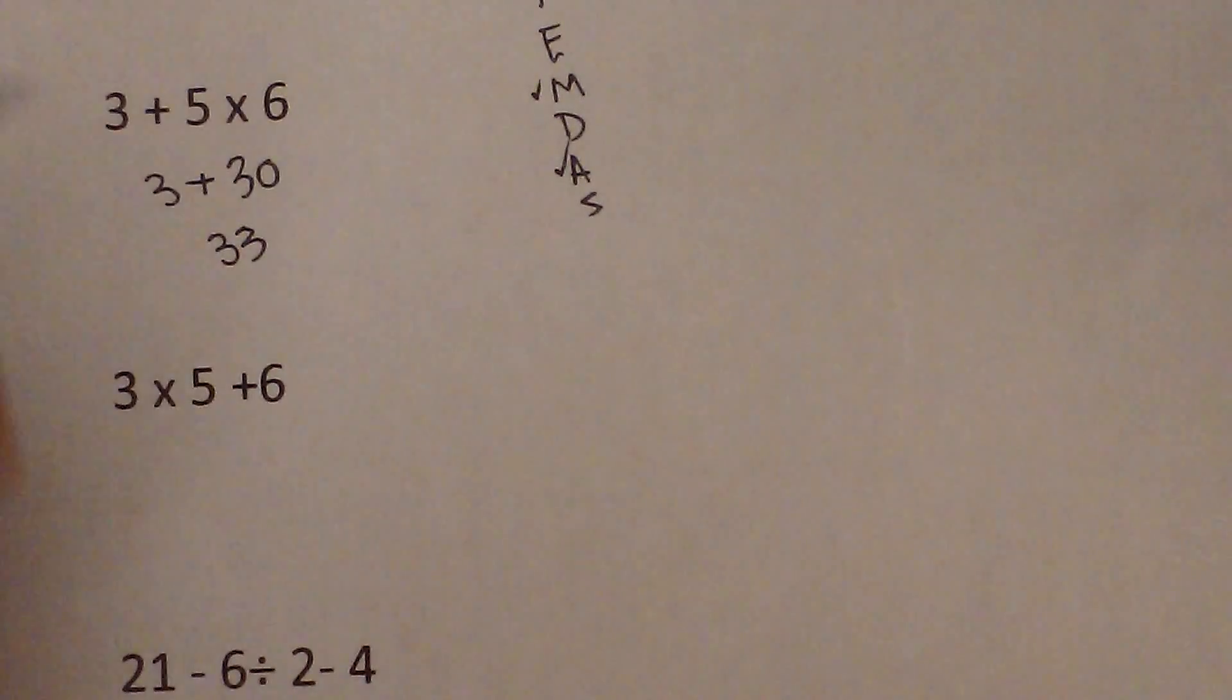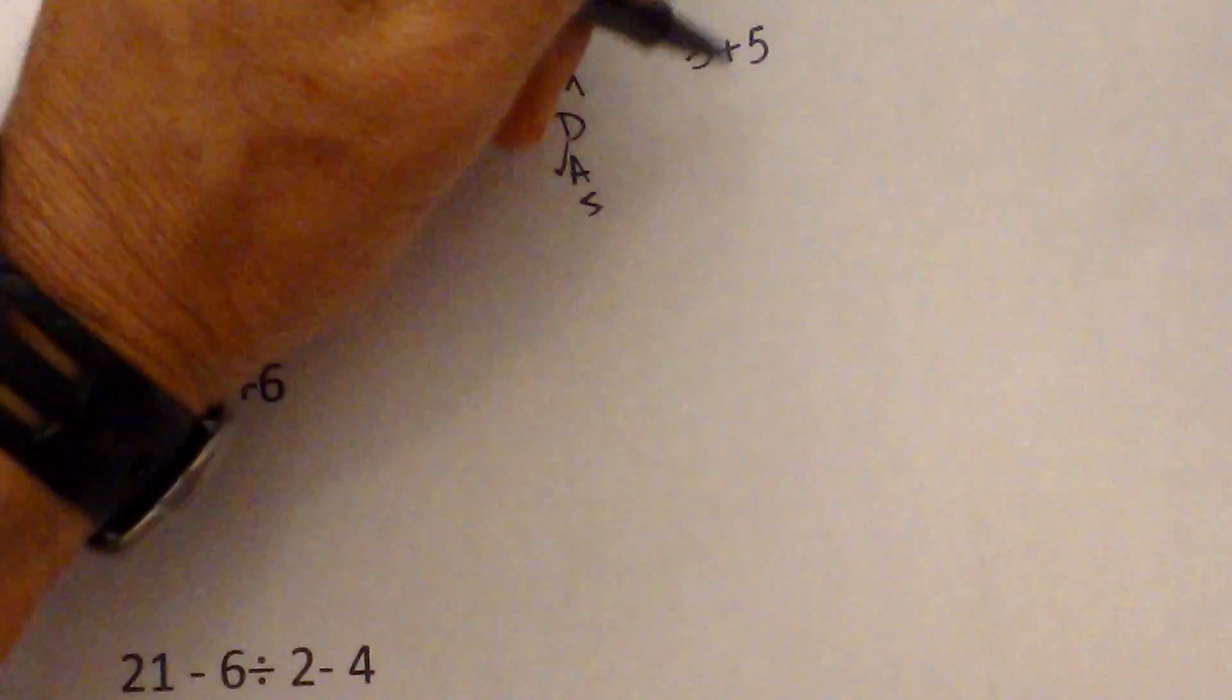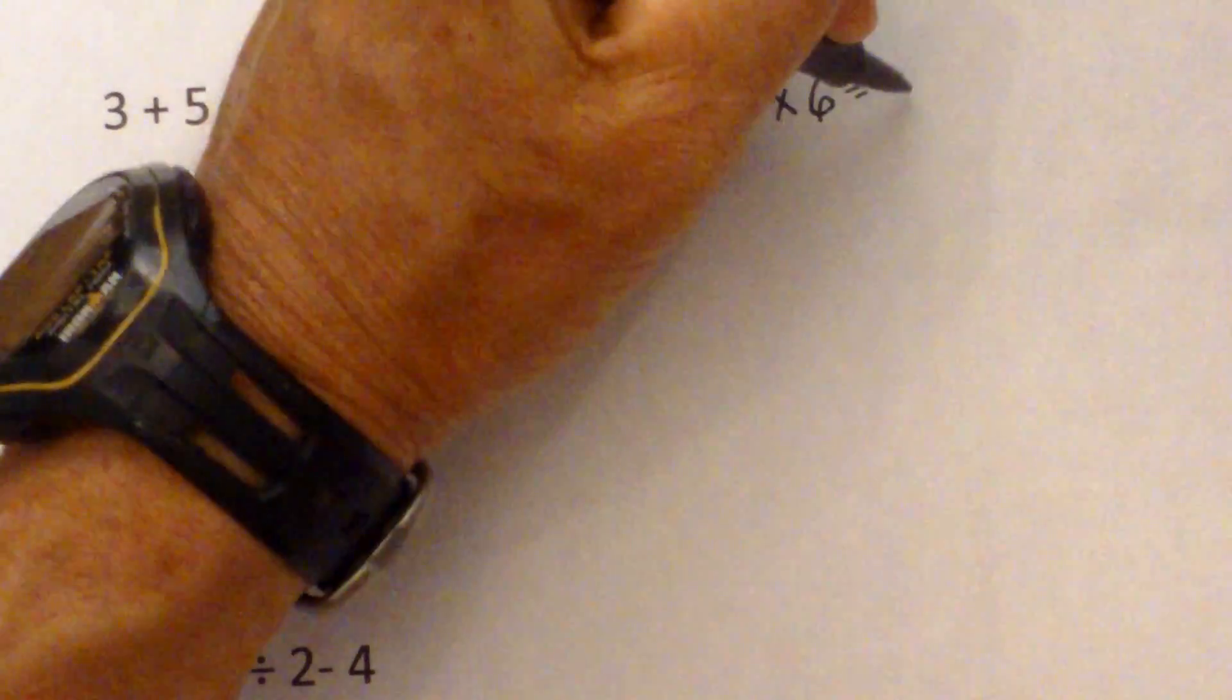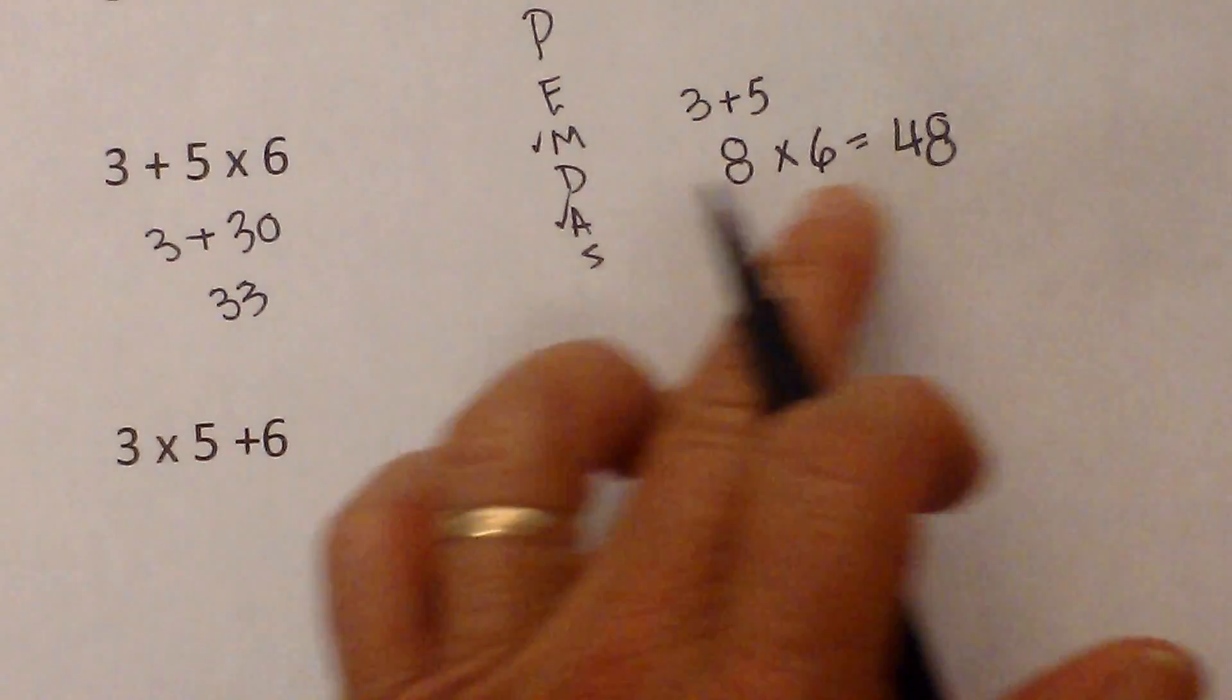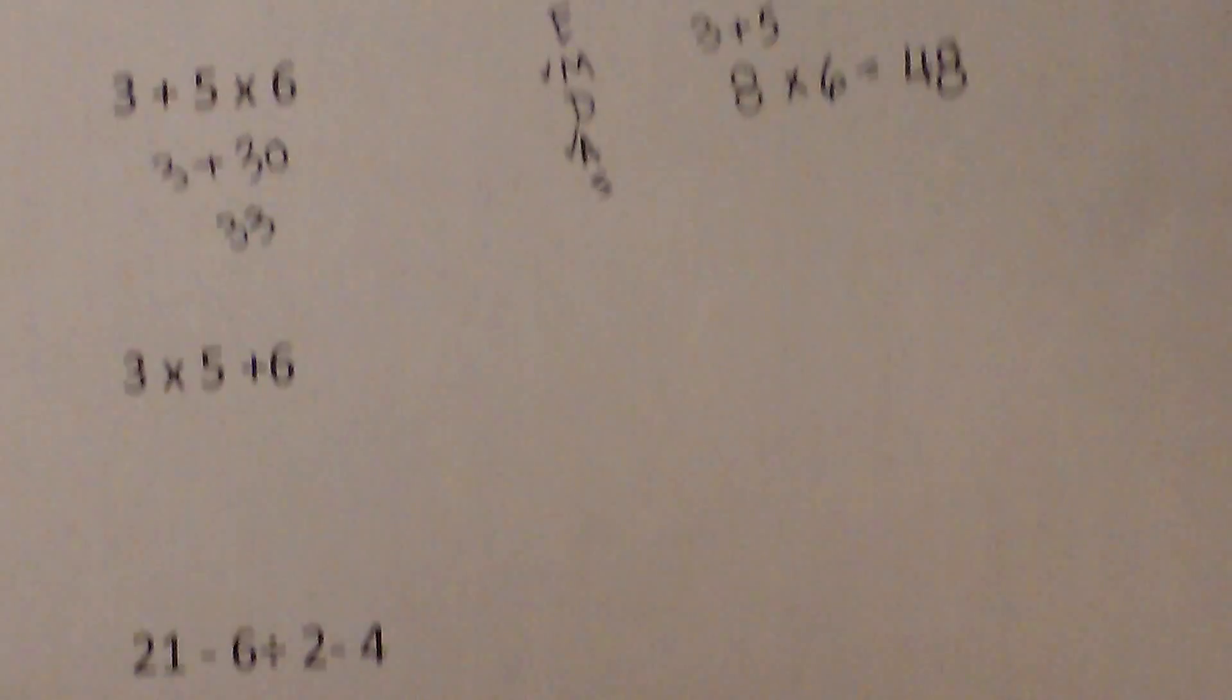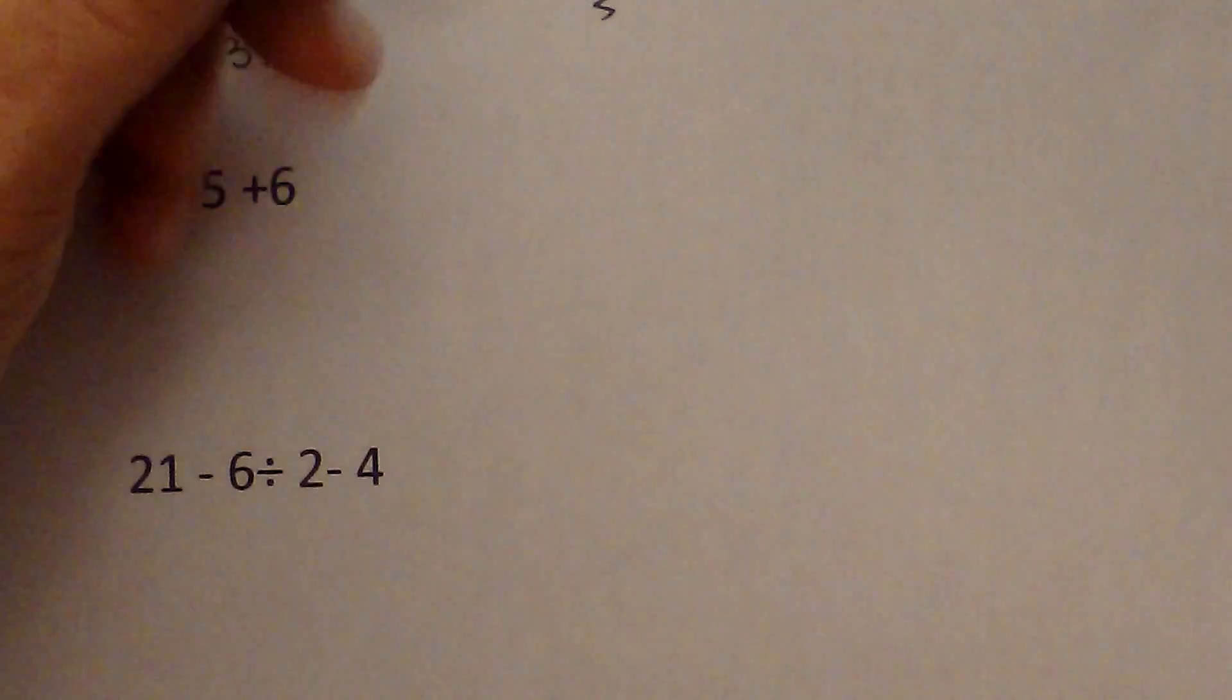So let's go ahead and compare that. If I would have worked 3 plus 5, that would have given me 8 times 6 is 48. And so if I would have completed the incorrect order of operations, it would have been incorrect. So it's very important you follow the correct order of operations. Let's move to the next one.